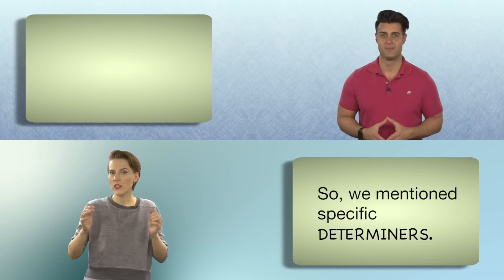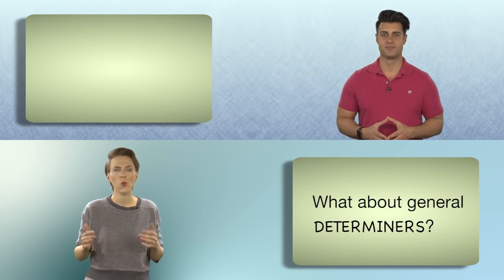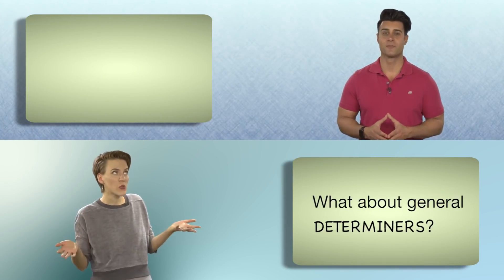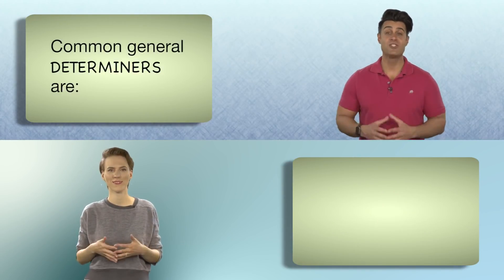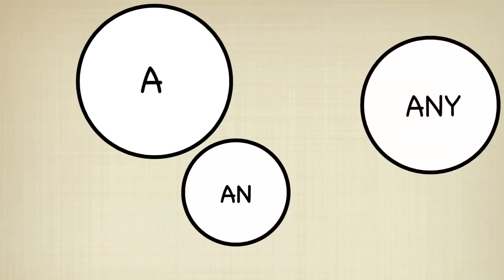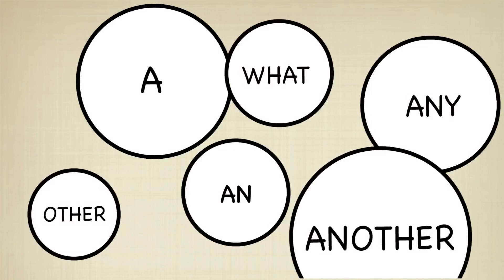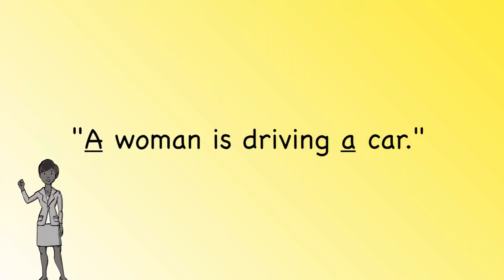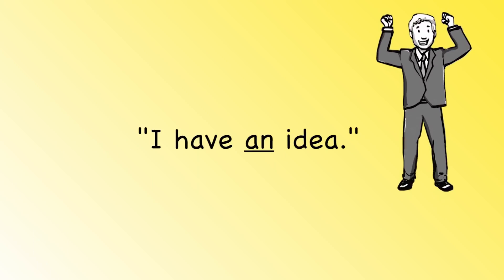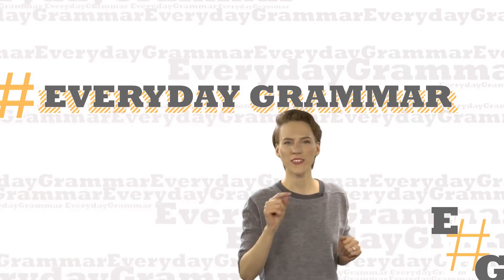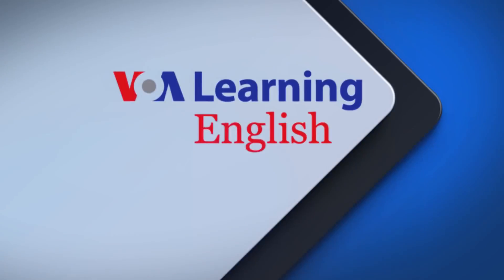So we mentioned specific determiners. What about general determiners? Common general determiners are — for example: "A woman is driving a car." "I have an idea." And that's Everyday Grammar.